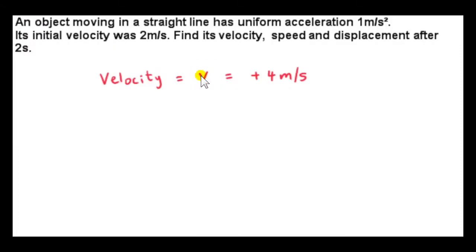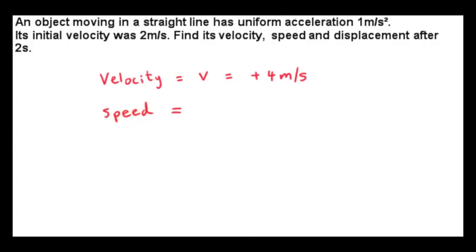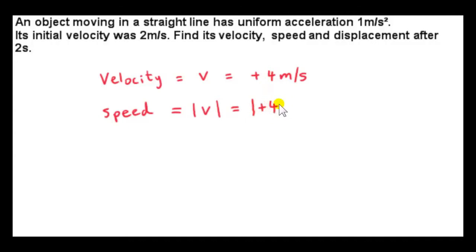We use the letter v to denote the velocity vector. We should really put an arrow on this because we are dealing with a vector quantity, but for linear motion that arrow is often omitted. We have to be careful that we are not talking about speed here — this is velocity, so you can put in the plus sign to emphasize direction. The speed is the magnitude of this quantity. Using vertical lines to indicate magnitude, the magnitude of plus 4 is just 4. So the speed is 4 m per second. Speed is always positive — it's the magnitude of a velocity vector.